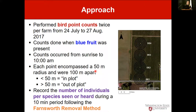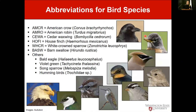Counts occurred from sunrise to 10 a.m. Each point encompassed a 50-meter radius — about 164 feet — and plots were separated by 100 meters. We recorded the number of individual bird species observed or heard within a 10-minute period, following the Farnsworth removal method, which is a standard ornithological survey approach. We focused on a few species thought to have potential to predate on blueberry fruit or provide biological control.